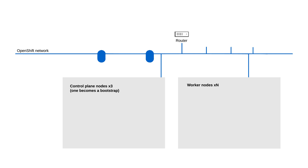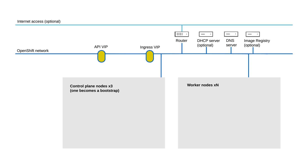The rest of the requirements are fairly standard: a DNS server and two A records — API VIP and a wildcard A record for the ingress. DHCP server is optional, and internet access is also optional as long as you provide a local mirrored image registry.